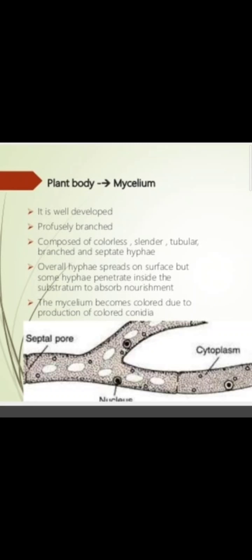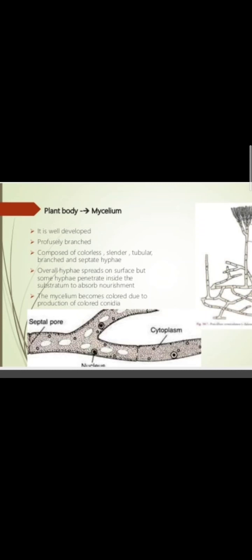The mycelium becomes colored due to the production of colored conidia. As shown in this diagram, you can see the filamentous branching structure of the mycelium, and you can also observe septa or septal pores. Drawing a line between the hyphae reveals the nucleus and cytoplasmic part.